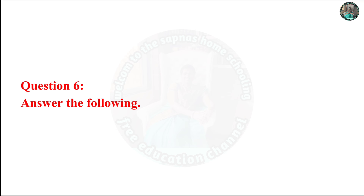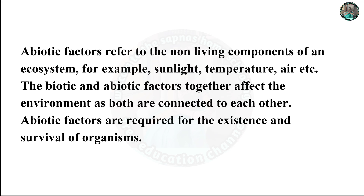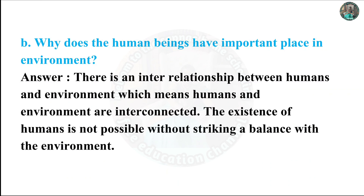Question 6: Answer the following. A. Write the factors that affect the environment. The factors which affect the environment are grouped into two categories: biotic and abiotic factors. Biotic factors refer to the living components of an ecosystem like animals and plants. Abiotic factors refer to the non-living components of an ecosystem, for example sunlight, temperature, air, etc. The biotic and abiotic factors together affect the environment, as both are connected to each other. Abiotic factors are required for the existence and survival of organisms.